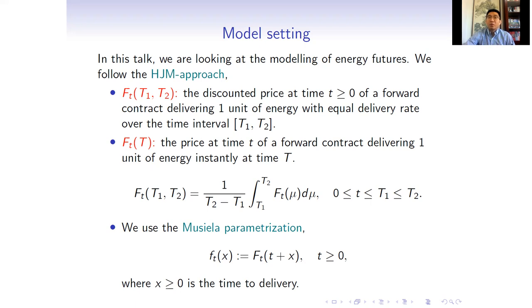Electricity forwards traded in the real world are contracts for prescribed power and delivery time interval in the future. We denote by F(T, T₁, T₂) the discounted price at time T of a forward contract delivering one unit of energy with equal delivery rate over the time interval T₁ to T₂. Similar to the HJM model for money markets, the instantaneous forward price Ft(T) is the price at time t of a forward contract delivering one unit of energy instantly at time T. We also stress that this artificial price typically only exists in the model.